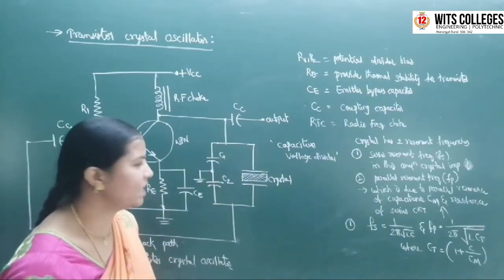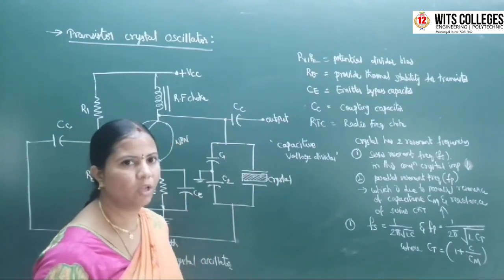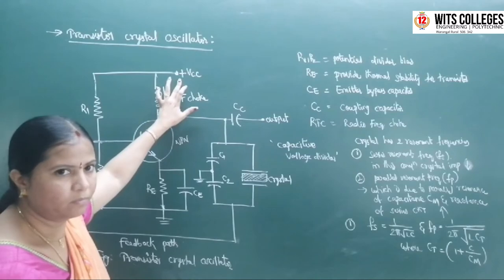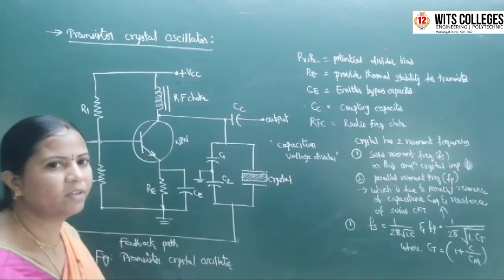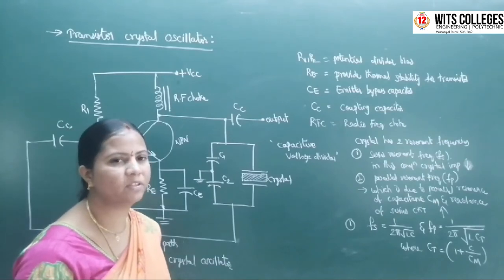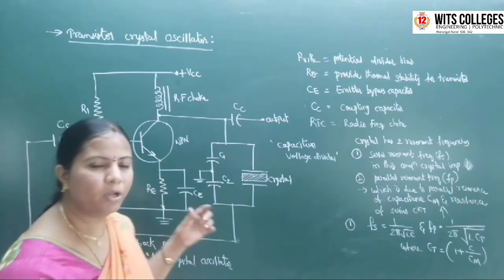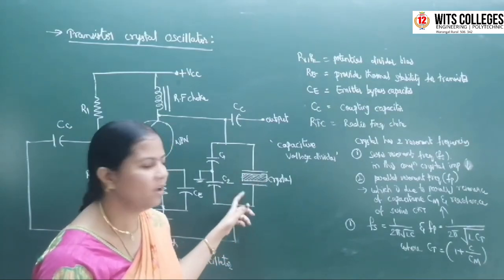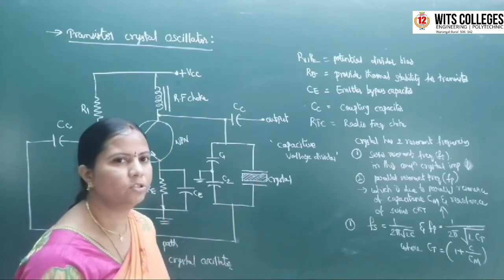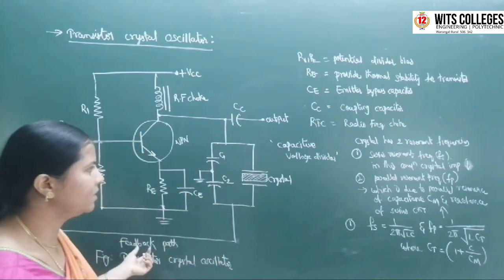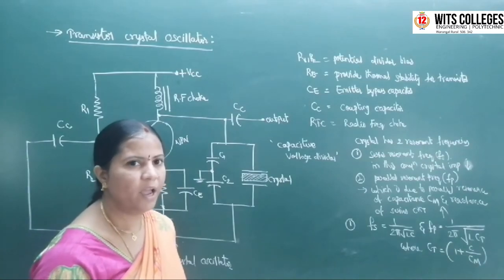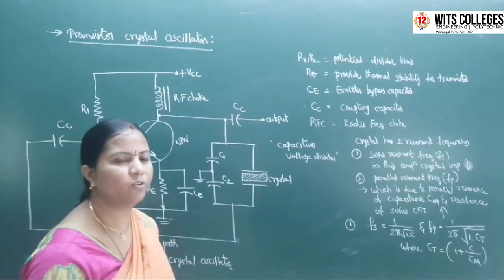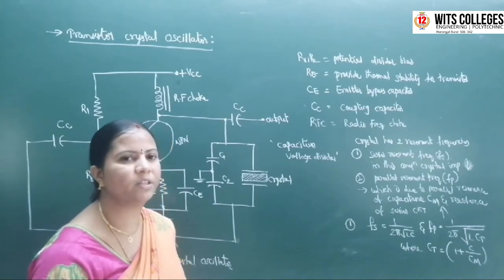The positive feedback is provided by the capacitive voltage divider. When the power supply switch is on, we will get high frequency stability of oscillations, because we are connecting the crystal in place of the inductor. The feedback circuit produces a 180-degree phase shift, and another 180-degree phase shift is provided by the transistor amplifier circuit. So the total phase shift around the feedback loop is 360 degrees, which is the condition for sustained oscillations.